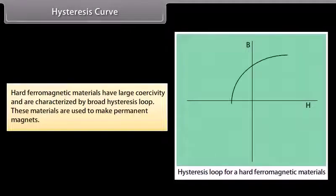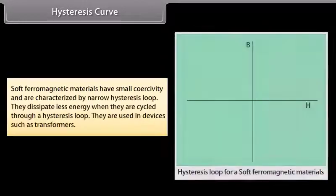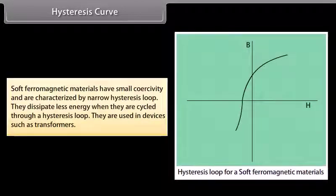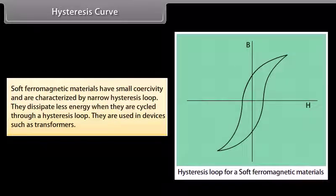Hard ferromagnetic materials have large coercivity and broad hysteresis loops; they are used to make permanent magnets. Soft ferromagnetic materials have small coercivity and narrow hysteresis loops, dissipating less energy when cycled. They are used in devices such as transformers.